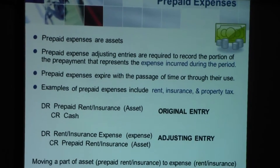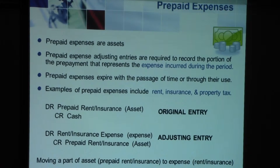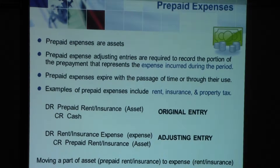Moving on to the next type, we have prepaid expenses. Prepaid expenses are assets — these are expenses that will become expenses in the future as you use them up. For example, rent and insurance: the vendor renting to you or providing the insurance policy would like their rent or insurance premiums right away at the beginning. They do not want to put themselves at risk, so they want everything up front. When you have paid the rent or insurance, it has actually become your asset because at any time you can ask for the cash back. So the original entry would be debit prepaid rent or debit prepaid insurance, and credit cash.